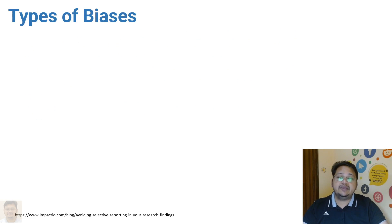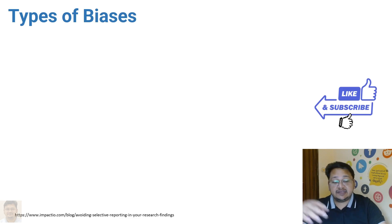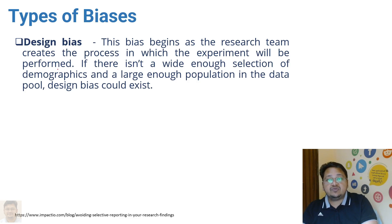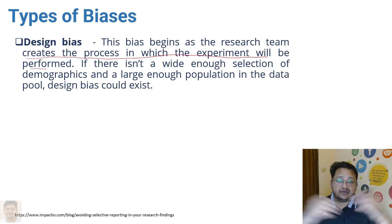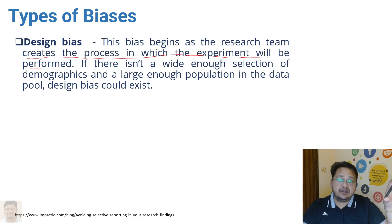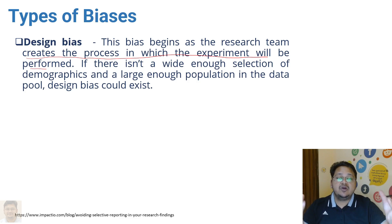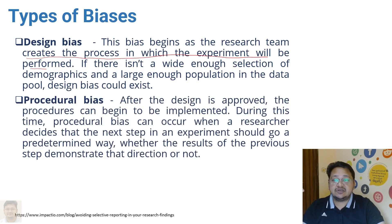When we discuss the different types of biases that exist, one is design bias. This bias begins as the research team creates the process in which the experiment will be performed. If there is not a wide enough selection of demographics or a large enough population — for example, in healthcare-related research using a standard dataset — and it is limited to a small group or dataset, then design bias could exist.